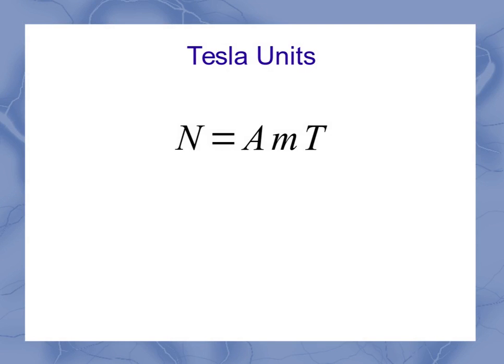We can take this equation and rearrange to solve for the Tesla. And what we would see is that a Tesla would be equal to a newton divided by an amp meter. Now, if I remember that this amp could actually be written as a Coulomb per second, then equivalently, I have this form for the Tesla.